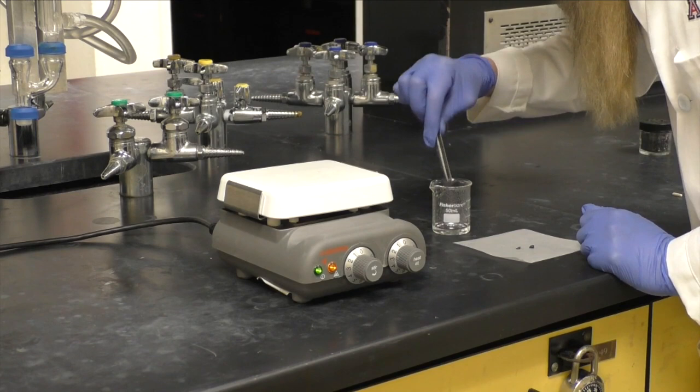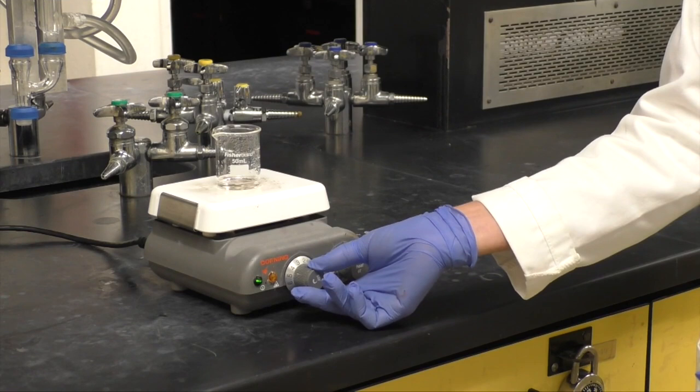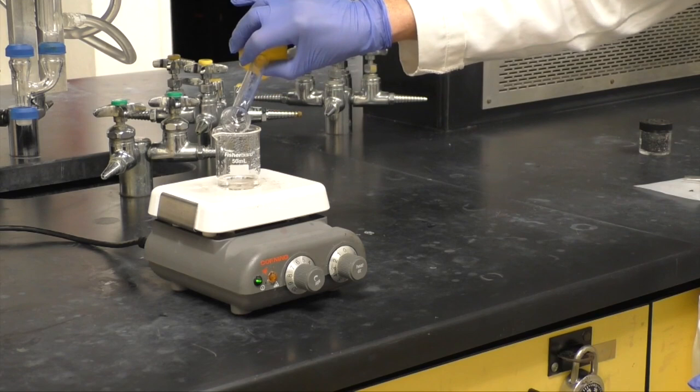Once the solution is cooled, add a stir bar and begin stirring. Add the 2 milliliters of acid. You should see the beginnings of a precipitate of benzoic acid form.